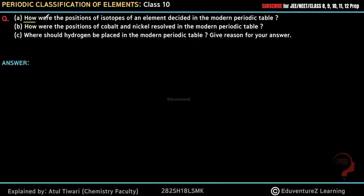Hello everyone. Our questions are: how were the positions of isotopes of an element decided in the modern periodic table? How were the positions of cobalt and nickel resolved in the modern periodic table? And where should hydrogen be placed in the modern periodic table? You have to give reasons for your answer. So let's start by understanding isotopes.